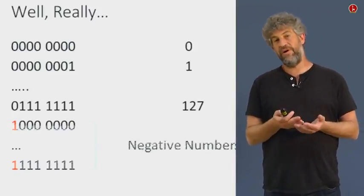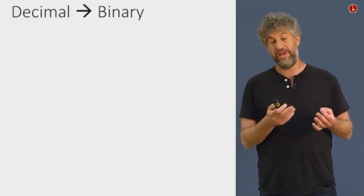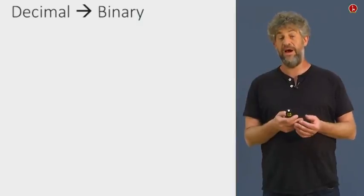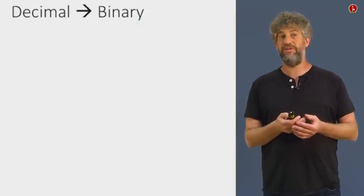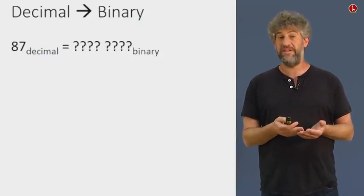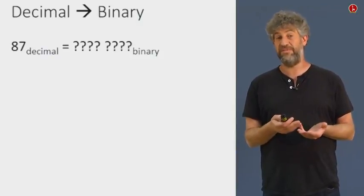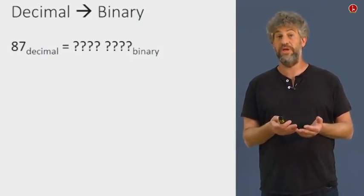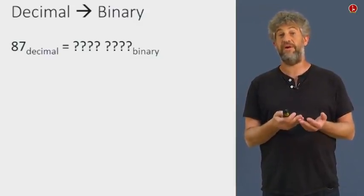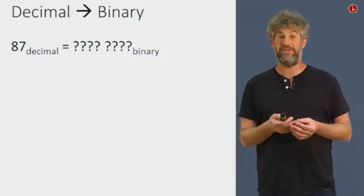So far we saw, if you get a string of bits, how can you convert it to decimal numbers? Now we're going to do the opposite thing. Suppose you're given a number in decimal, 87 for example. How can you represent it as a sequence of bits? This is also something that we should be able to do if we're going back and forth between decimal notation and binary numbers that are actually represented in a computer.